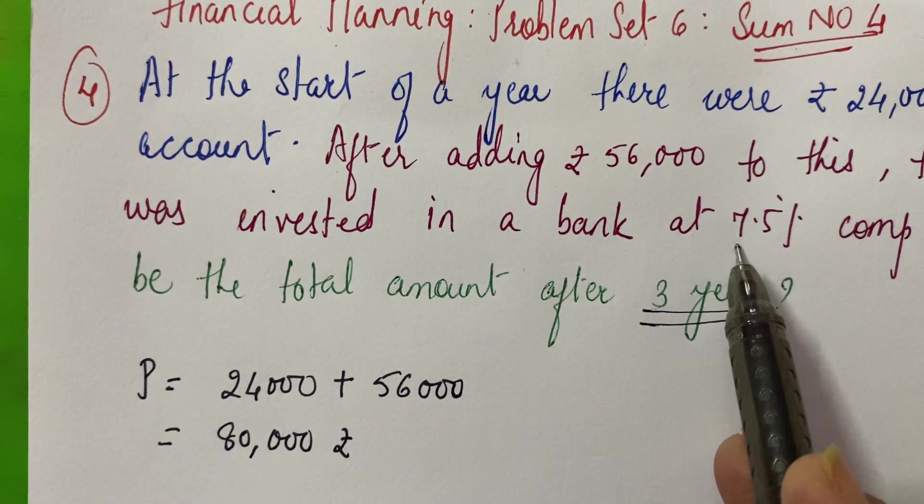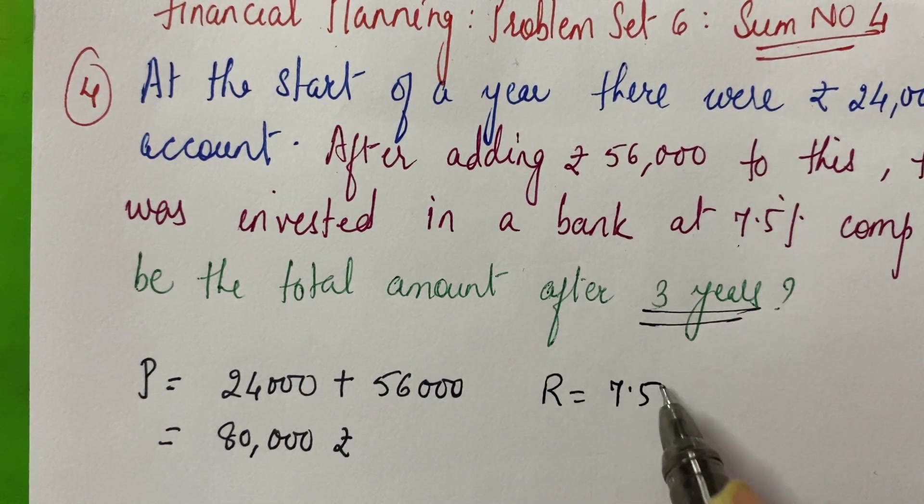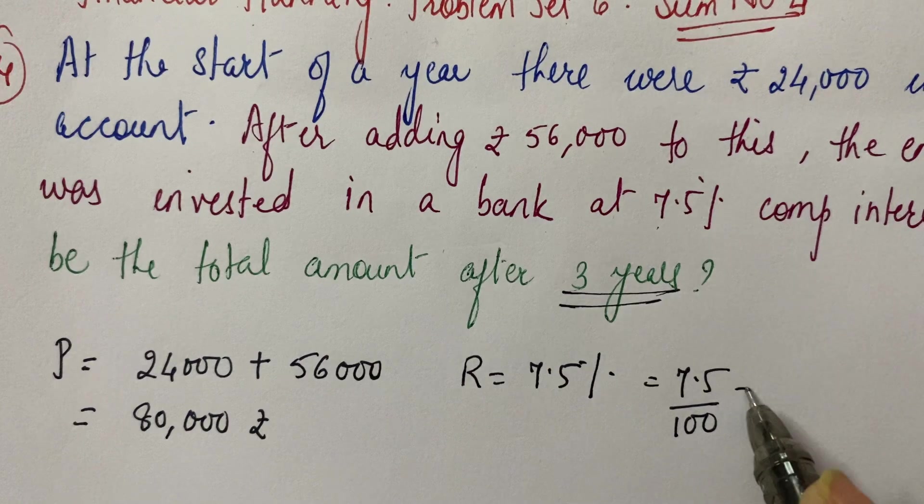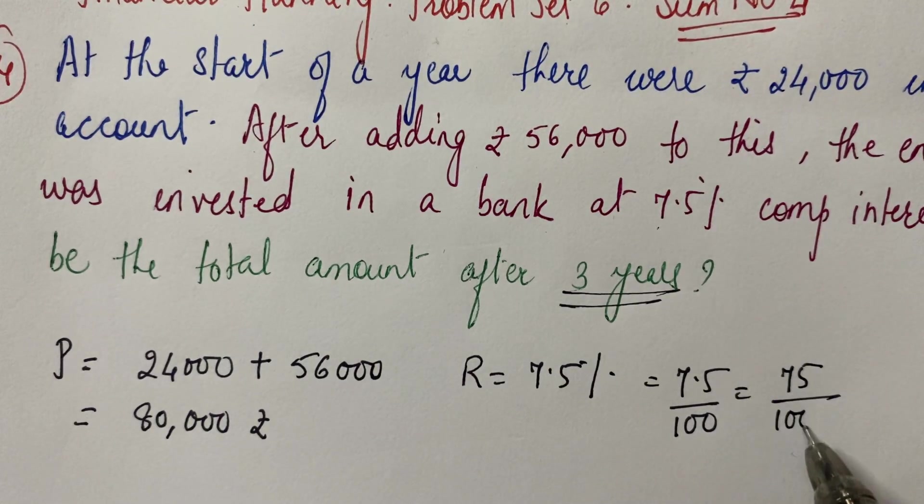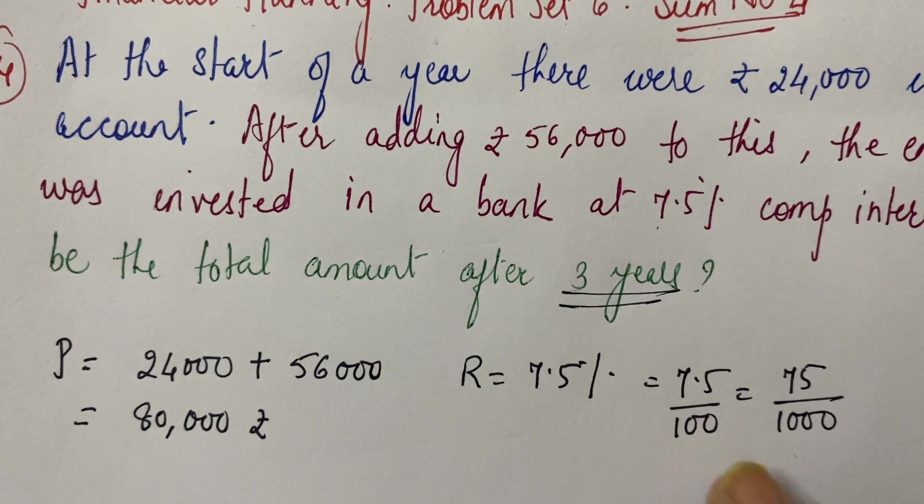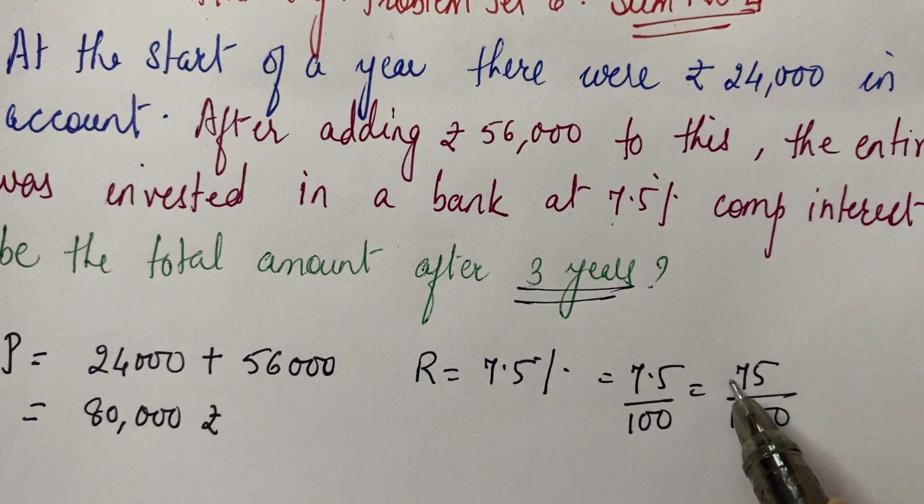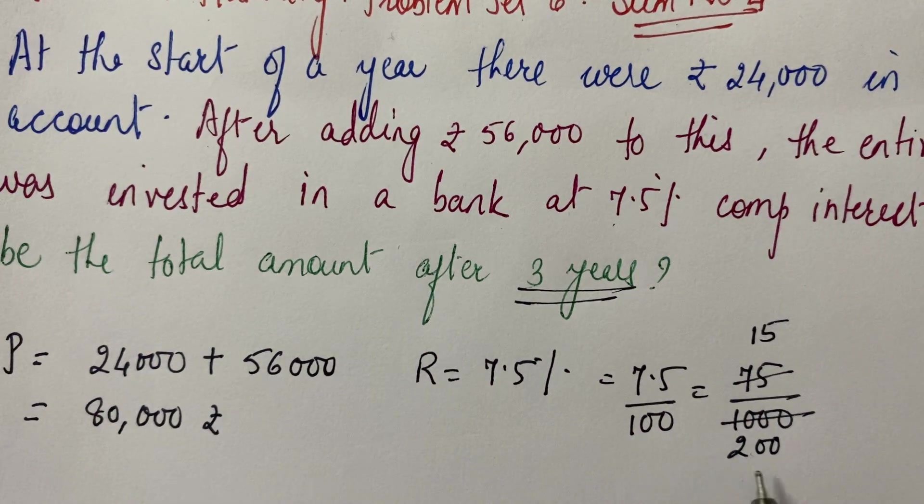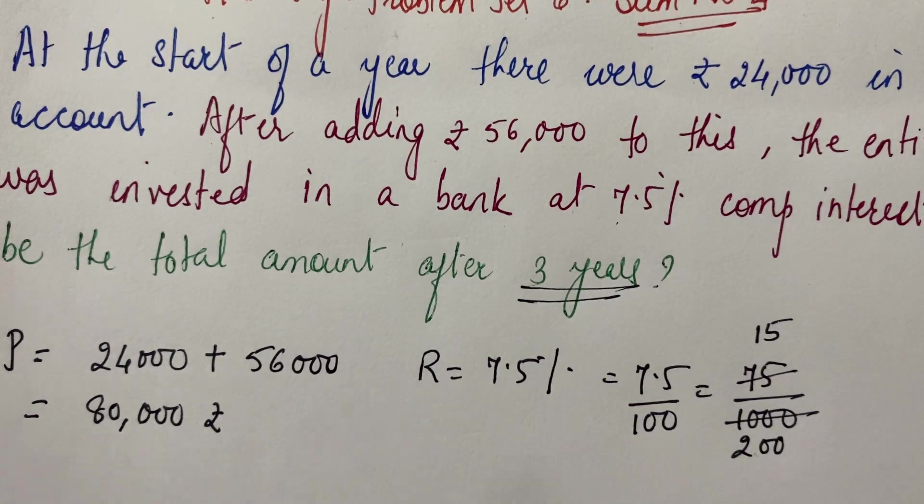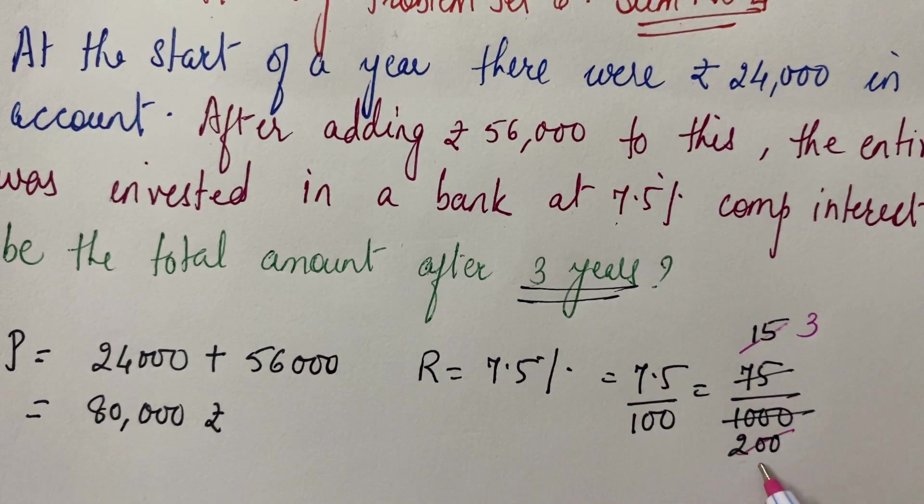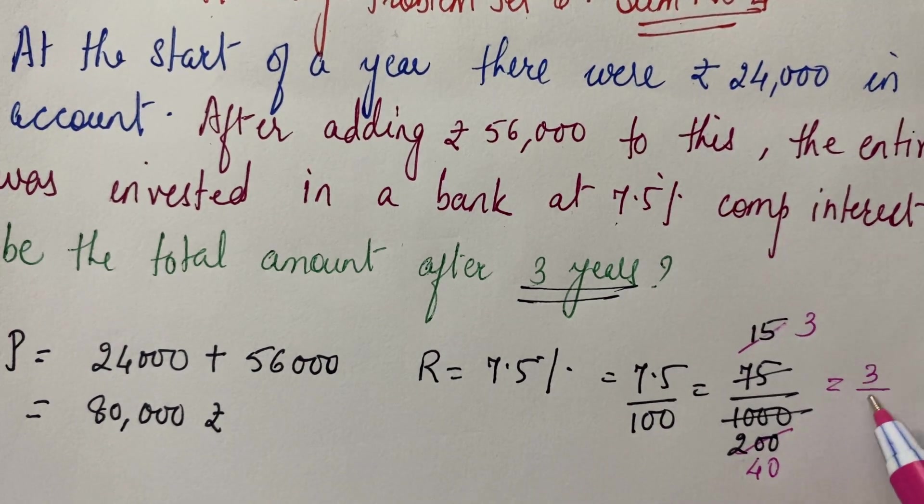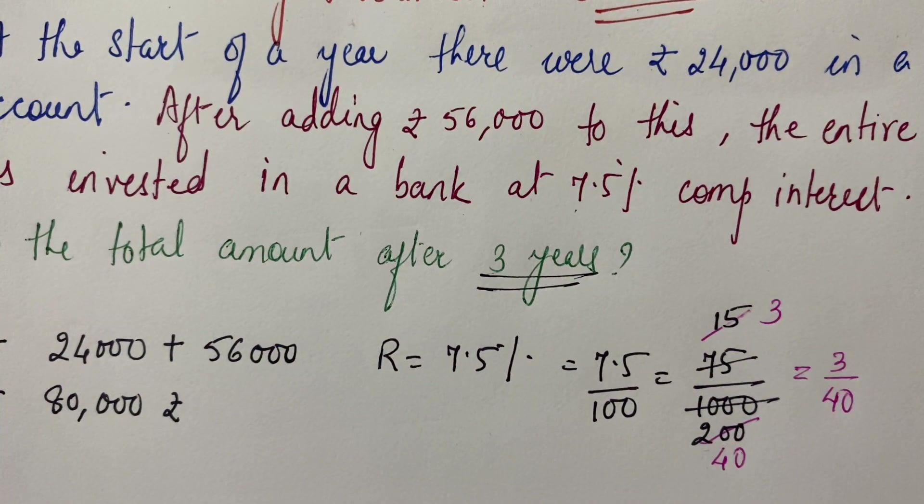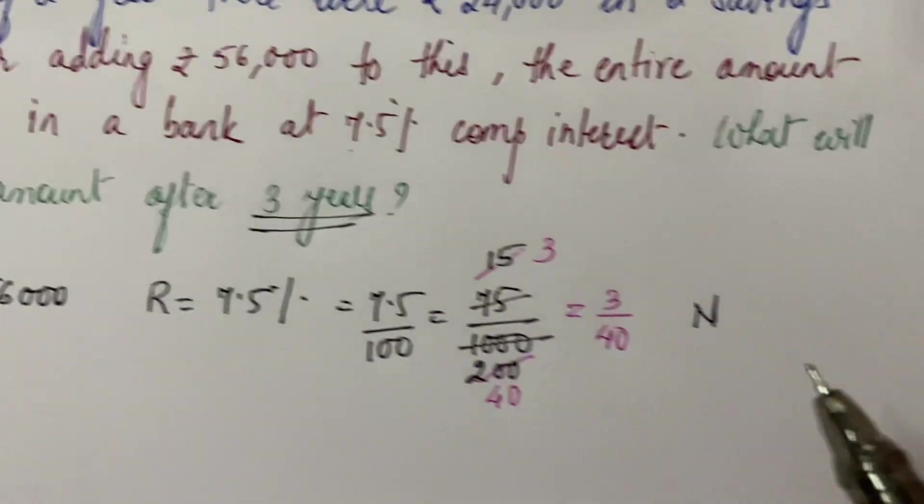Now the rate of interest is how much? 7.5%. 7.5% that means it is 7.5 upon 100. And if you reduce this, you can make this 75 upon 1,000. If you remove the decimal point here, then in the denominator one zero will increase. Now see, 5 and 15, 5 and 20. You can simplify this to 3 upon 40. You've converted 7.5%. R is equal to 3 upon 40. This is the rate of interest. What is the period? N is equal to 3 years.